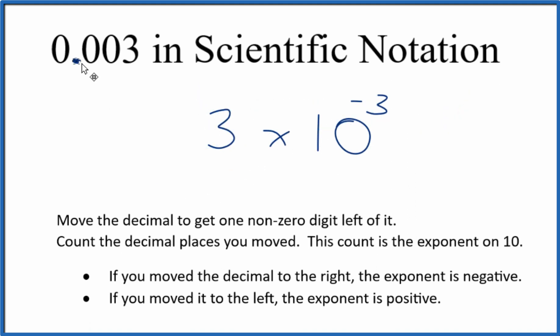And remember, since we moved the decimal place to the right, when we move it to the right here, the exponent is negative, just like we found before. This is Dr. B, converting 0.003 to scientific notation. It's 3 times 10 to the negative third. Thanks for watching.